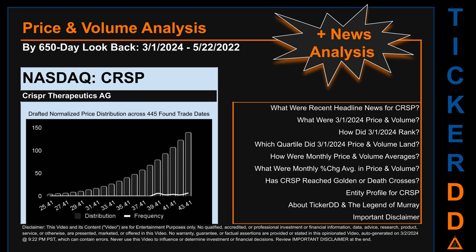Now that we have made our lawyers happy, capitalist brothers and sisters, let's get started. CRSP went public on October 19, 2016, which was roughly seven years and five months ago. Looking back 650 calendar days from Friday, March 1st, 2024, to Sunday, May 22, 2022, we found 445 applicable trade dates for use in our analysis. The chart shown on this page is our initial attempt at studying the price for CRSP after dynamically normalizing price distribution across those discovered trade dates. The bar chart is the generated distribution.